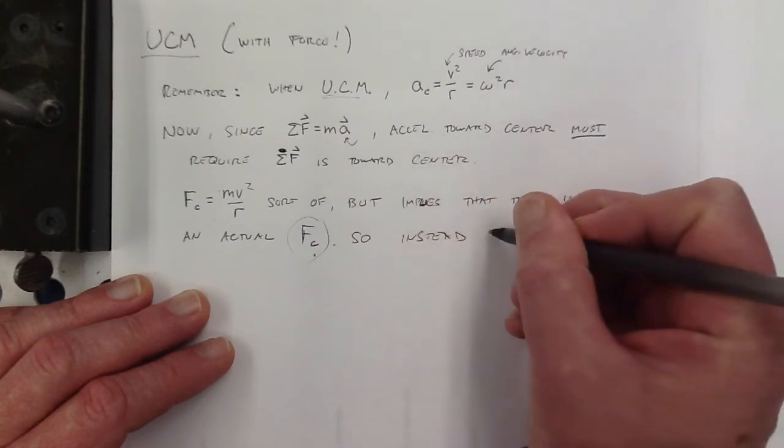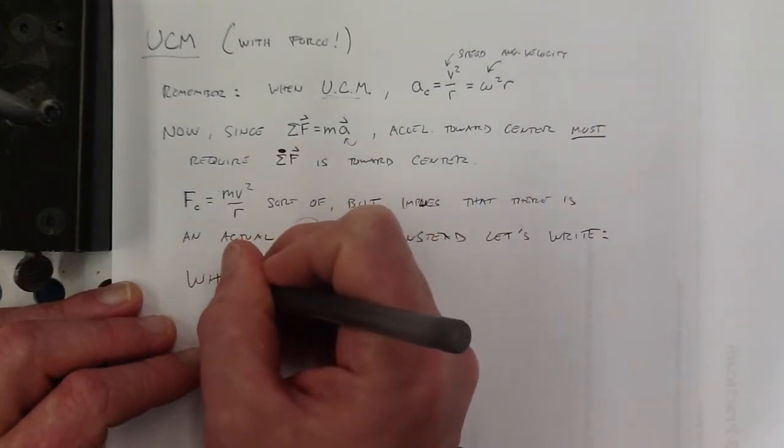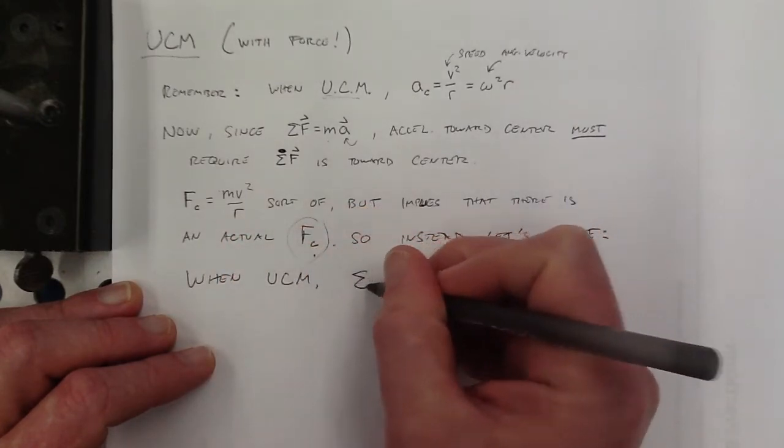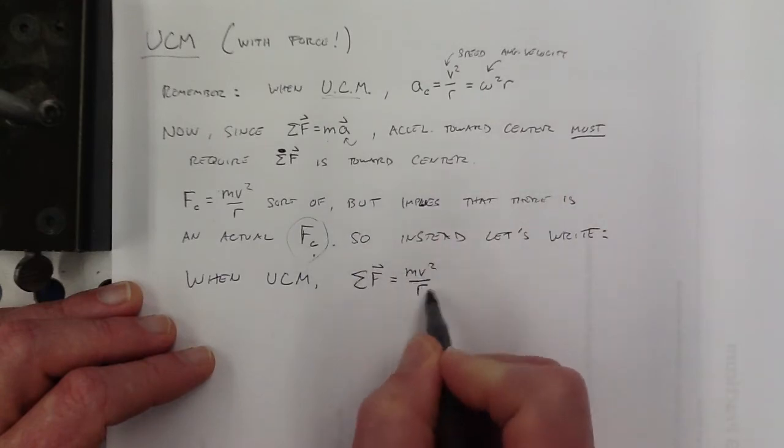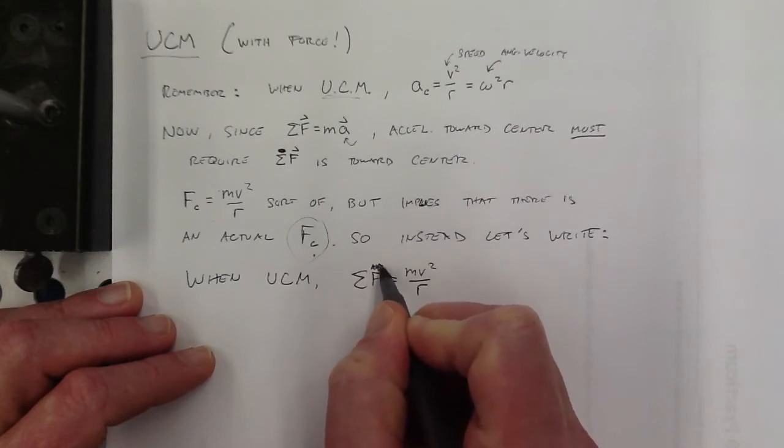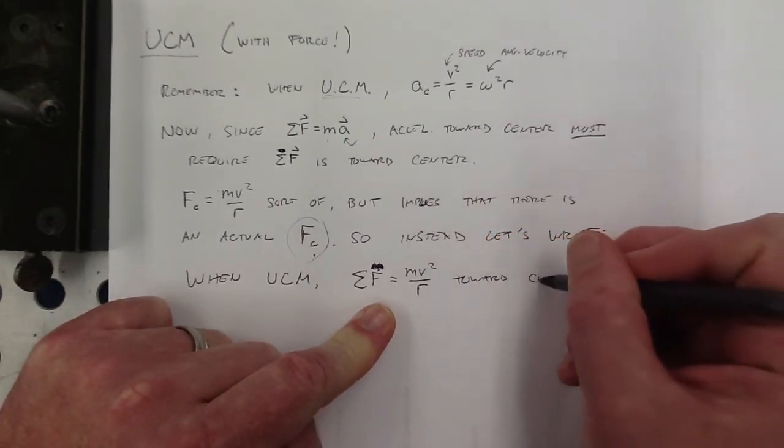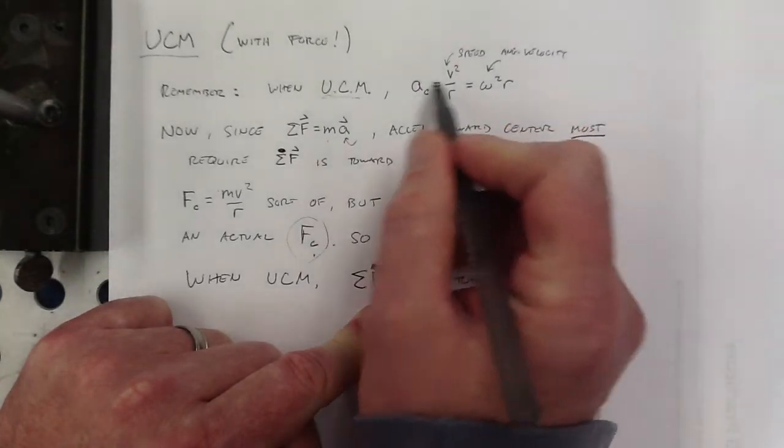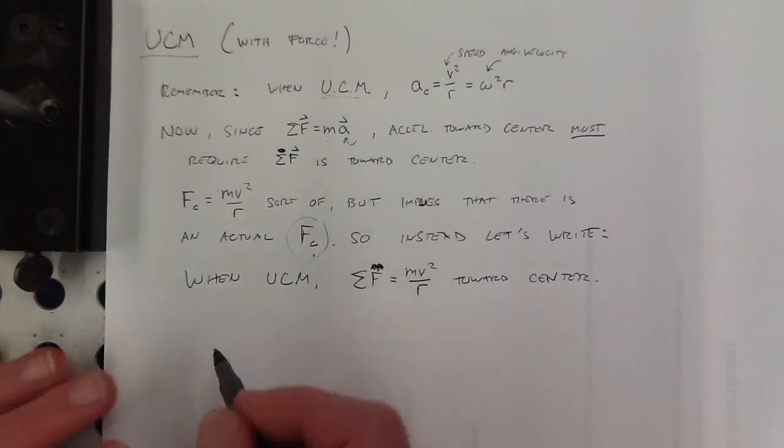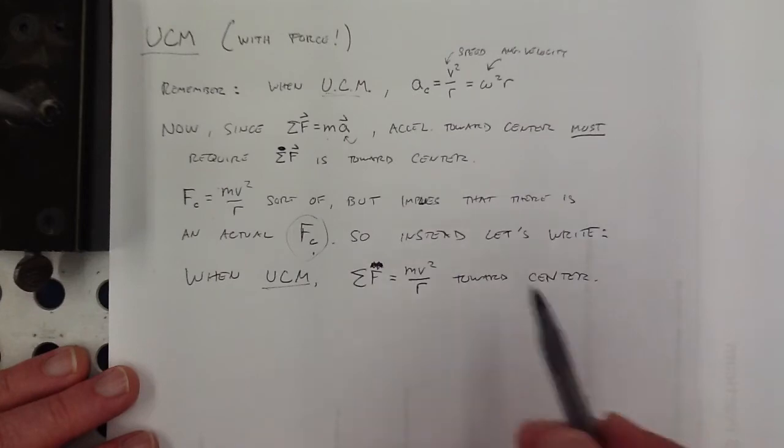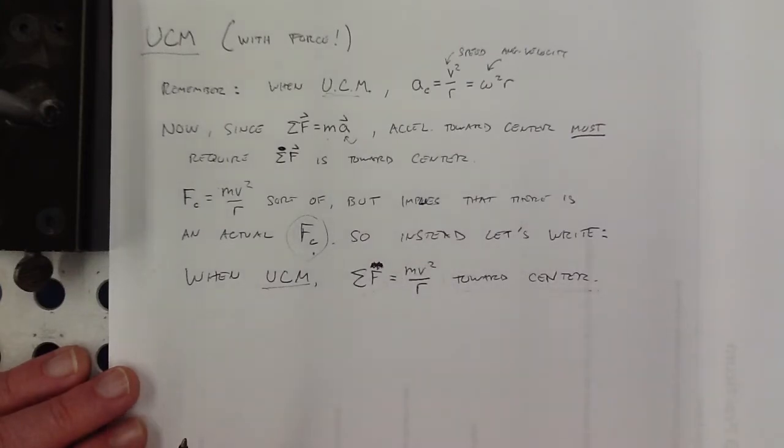So instead, let's write that when you have uniform circular motion, the sum of all forces must equal mv squared over r, and we'll say that that is toward the center. In exactly the same way that we defined this, no vector hat on that. We just said it's toward the center, right? So that's what we need to do. We just need to understand when there's uniform circular motion, make your force diagram, and then the sum of all forces must be toward the center. That's got to be the winning direction, and it has to equal this.